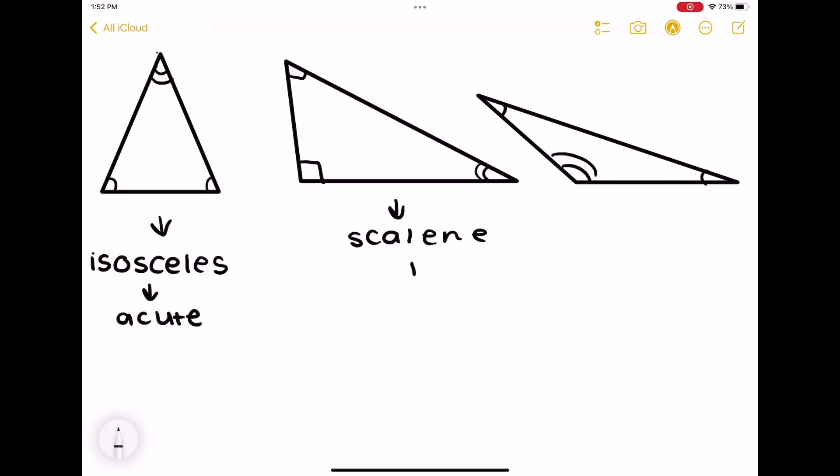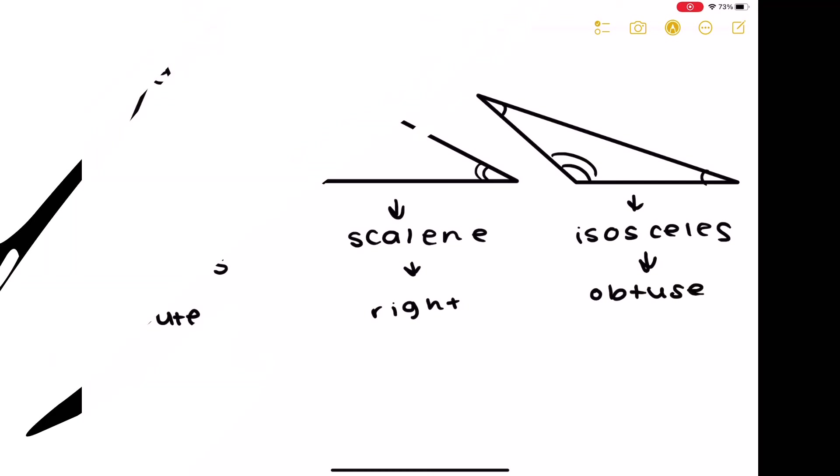Now this one is scalene and it is a right one. It's a right triangle because there's a right angle. And the last one's isosceles, but this time it's obtuse because the biggest angle is obtuse.